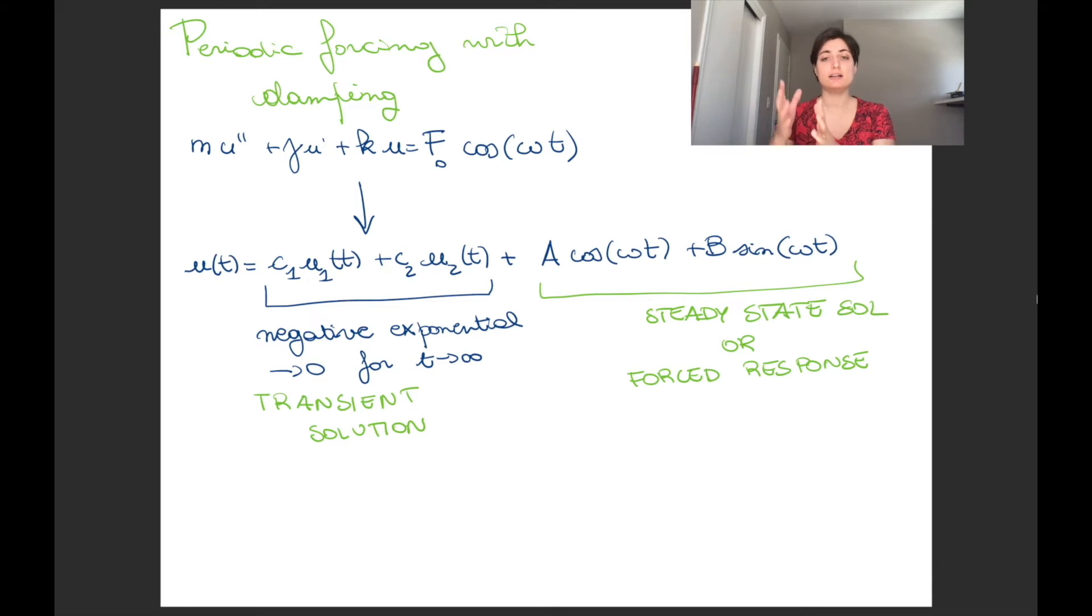The other block, on the other hand, has sine and cosine, and they're not disappearing any time. So that part is called the steady state solution, or the forced response. It's a response that comes from forcing the system.